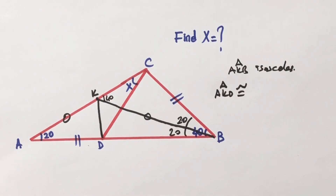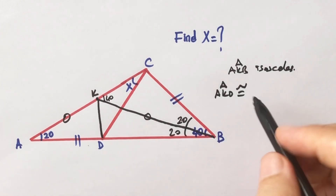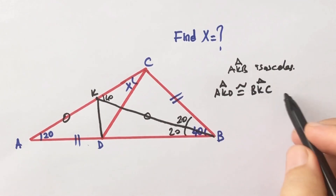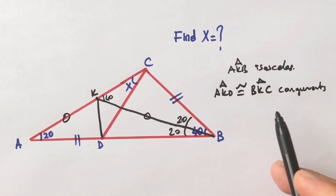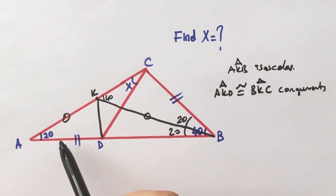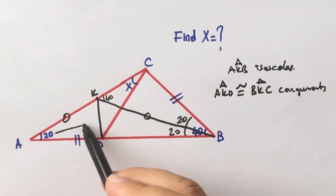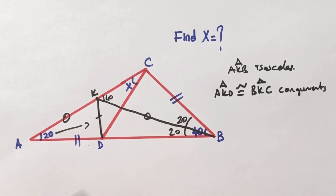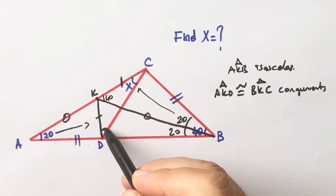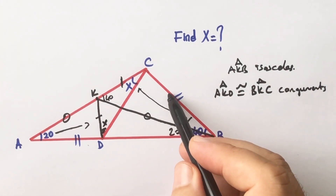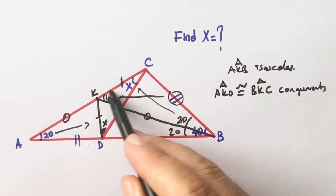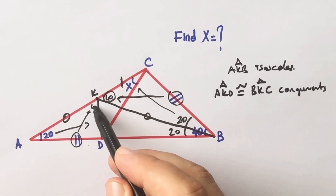Triangles AKD and BKC are congruent because they have the same two lengths and the angle between these two equal sides. Since the two triangles are congruent, we know that congruent triangles have the same lengths and angles. Therefore, if this length is opposite the 20 degrees, the side opposite the 20 degrees must be the same length. So if this side is x, this angle must be x degrees. And if the opposite of this length is 40 degrees, the opposite of this length must also be 40 degrees.